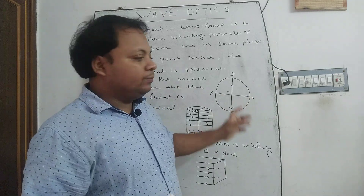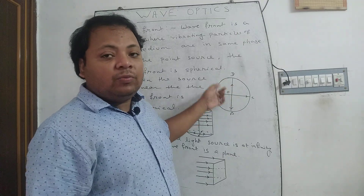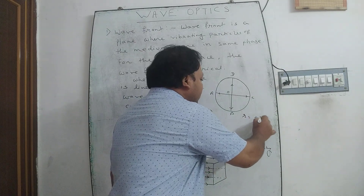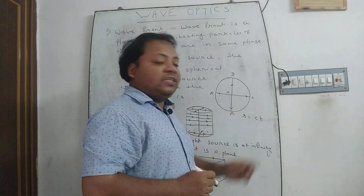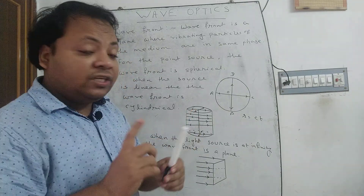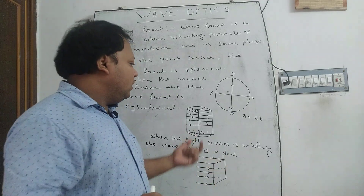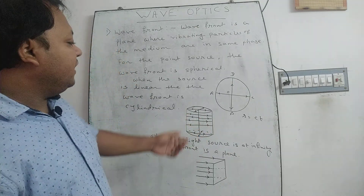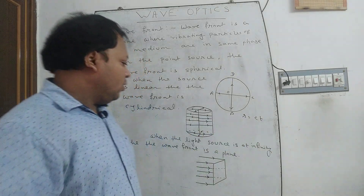OA, OB, OC, or OD is the radius of the sphere, and the radius R is equal to C into T, where C is the speed of light and T is the time taken. When the source is linear — for example, a tube light — then the wavefront is cylindrical. In this case, the radius of the cylinder is also equal to C into T.